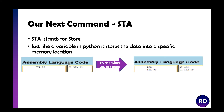STA stands for store. Just like a variable in Python or VB, it stores the data into a specific memory location. If you just type STA 99 with nothing in the accumulator, it'll put nothing into slot 99. You're much better off typing INP then STA 99 — whatever number you type in will appear in the 99th mailbox.